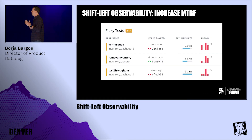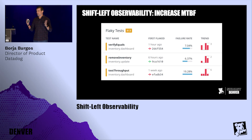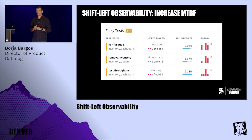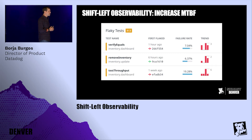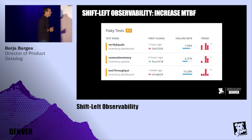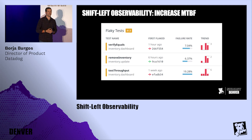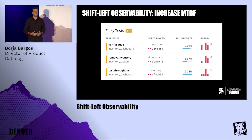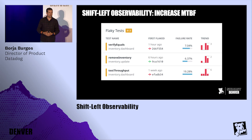Another way shift left observability helps is to increase mean time between failures. Talking to many of our customers, the biggest reason why builds fail is because of flakiness. As a developer, you push code, the build starts, and it fails. You know your code didn't break anything, so you hit retry, sit idle for five minutes or maybe a couple hours, and the build passes — or maybe it fails again and you hit retry again. And then the third or fourth time, it passes. It was just a flaky test. Just a flaky job.